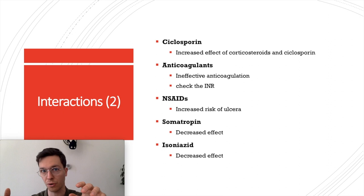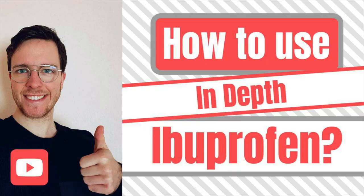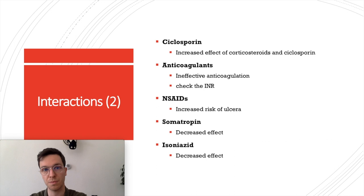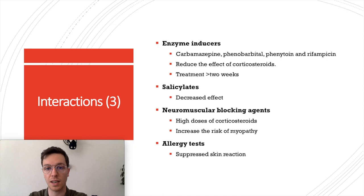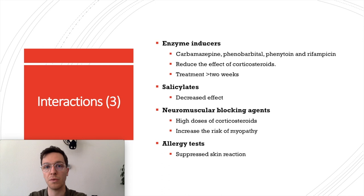When combined with cyclosporins, the effect of both prednisolone and cyclosporin may increase, so both doses may need to be lowered. With anticoagulants, this may lead to ineffective anticoagulation — check INR regularly. With NSAIDs, this increases the risk of ulcers. With somatropin, there may be a decreased effect of somatropin. With isoniazid, the effect of that medication may also be decreased. When combining with enzyme inducers like carbamazepine, the effect of corticosteroids is reduced — always wait two weeks after stopping enzyme inducers before starting corticosteroid treatment.